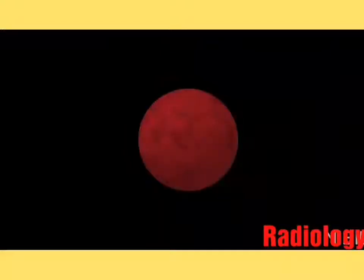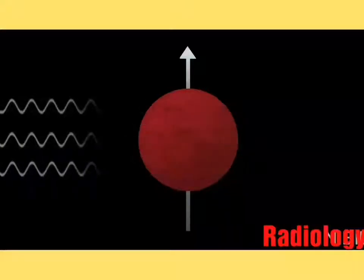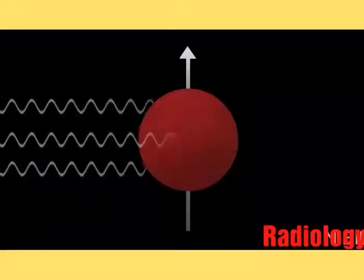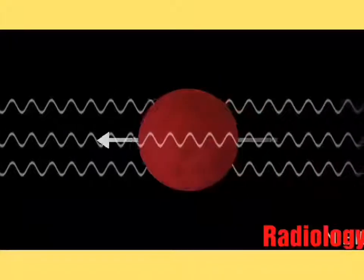MRIs use protons, which are abundant in the human body. All protons spin, creating a small magnetic charge. When a strong magnetic field is introduced, as is the case in an MRI machine, the protons align with that field.